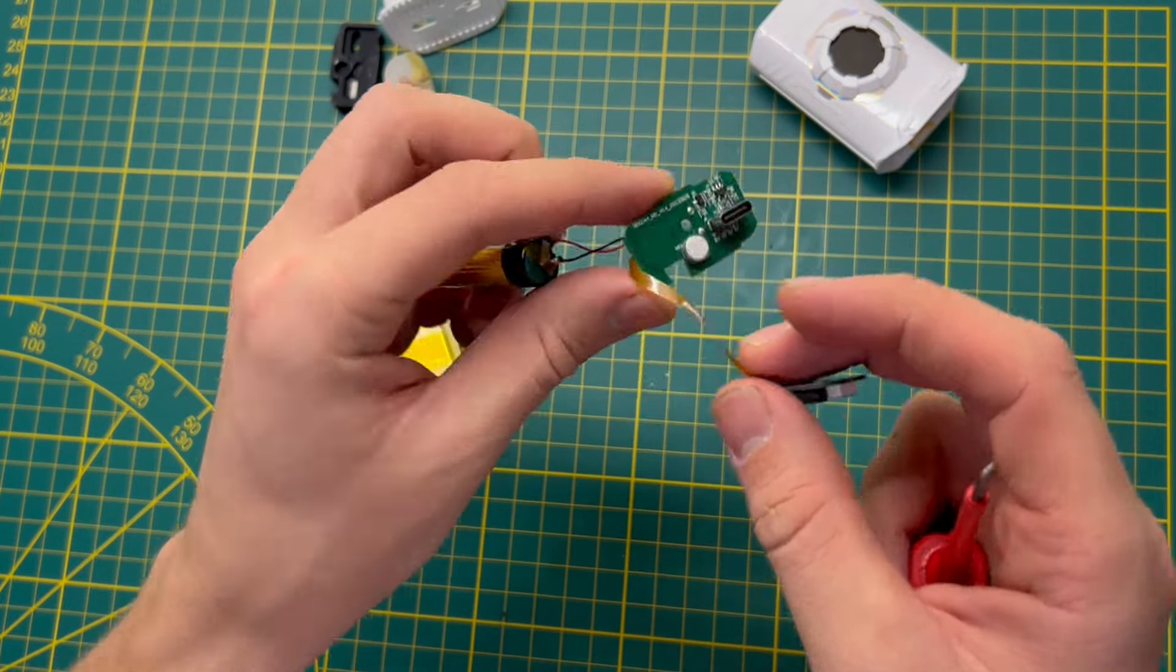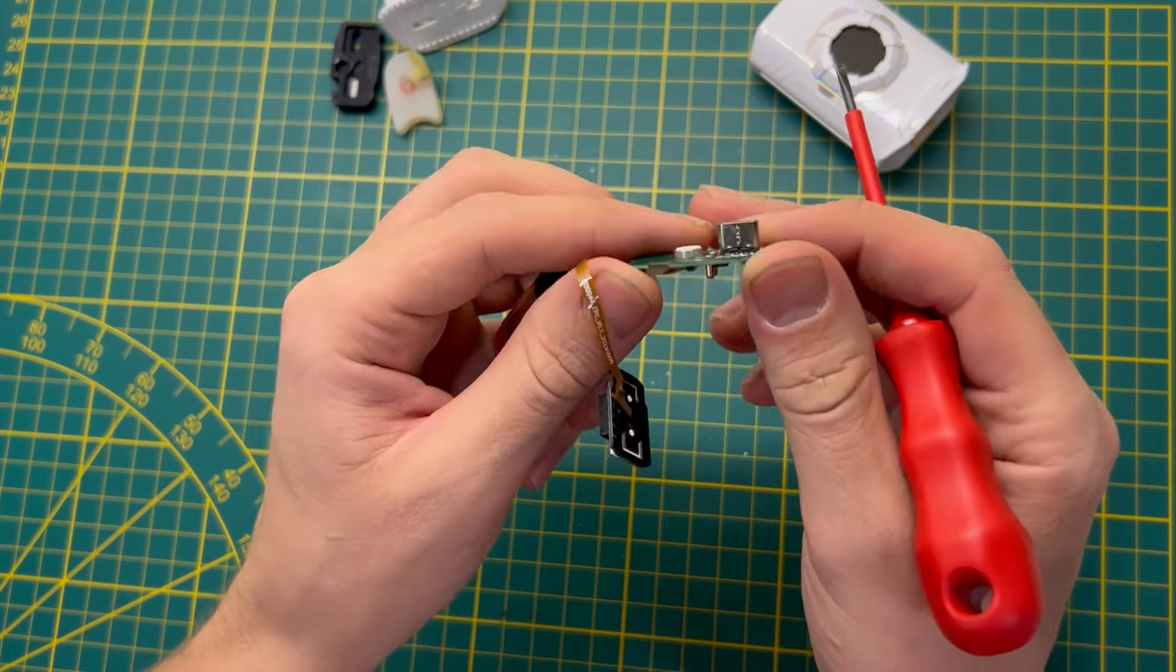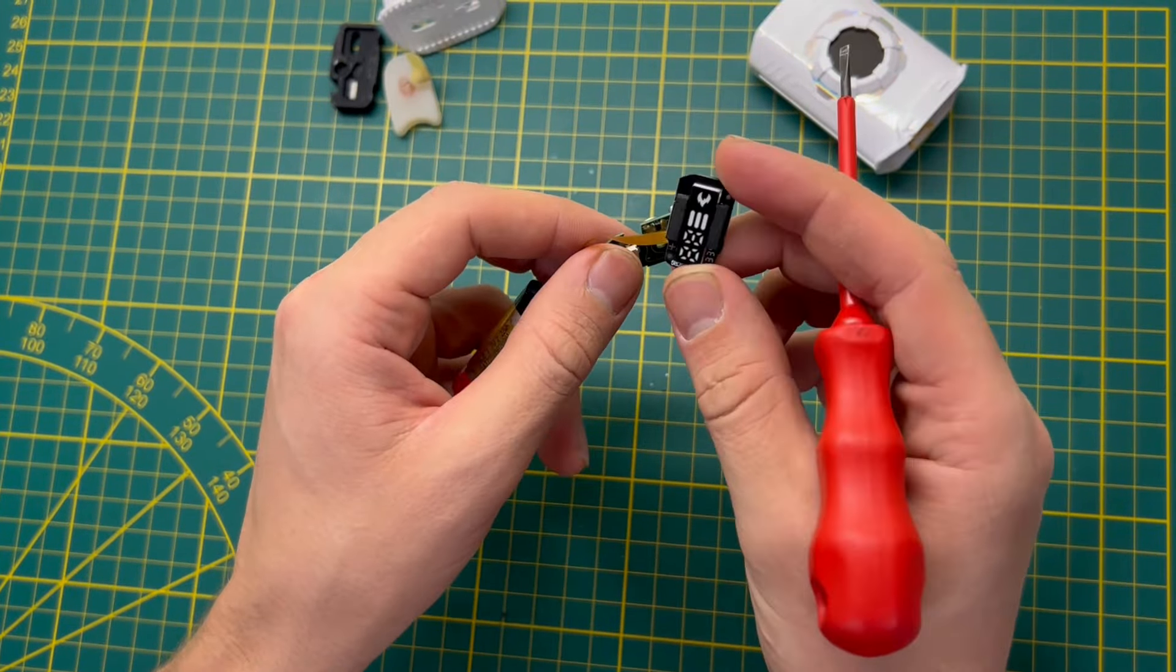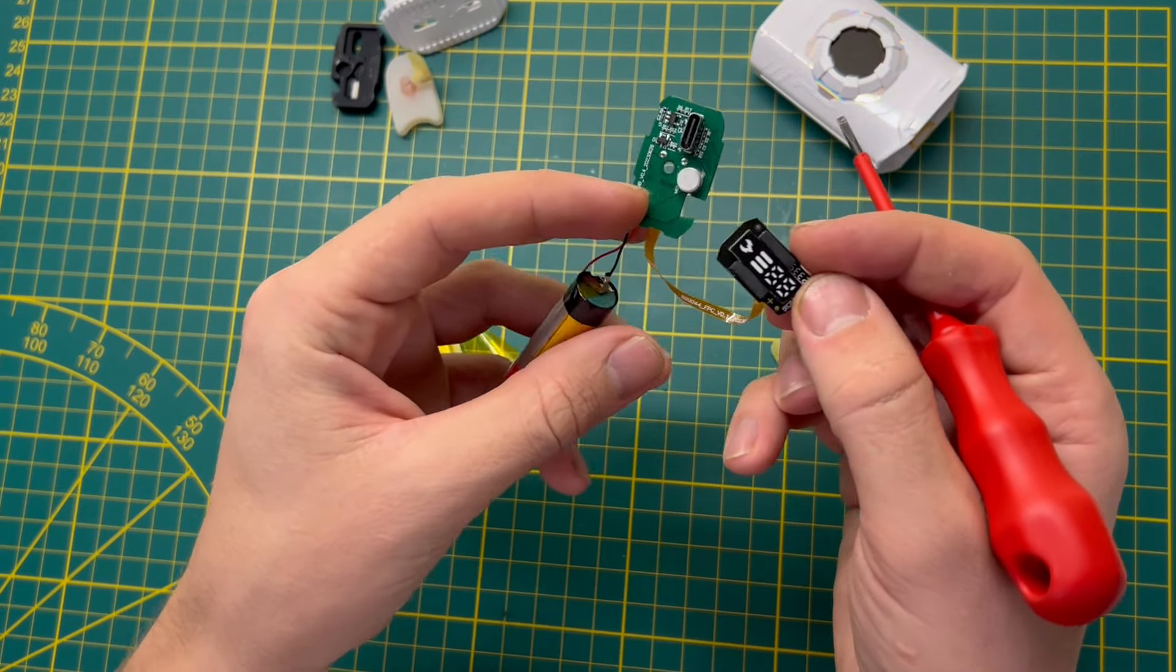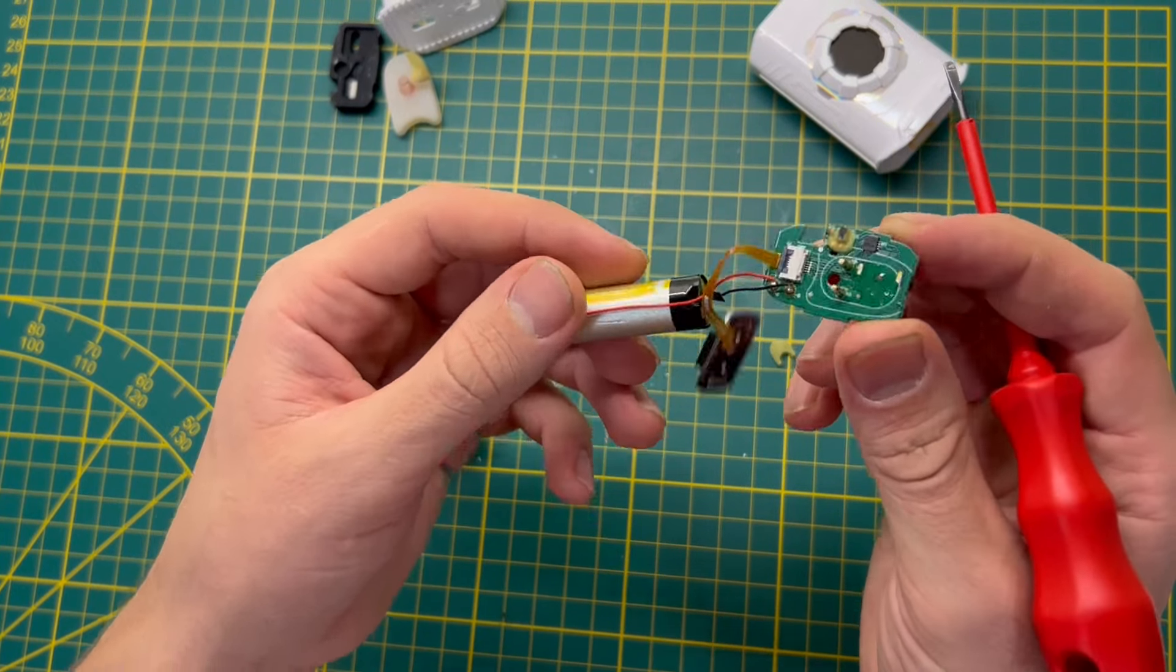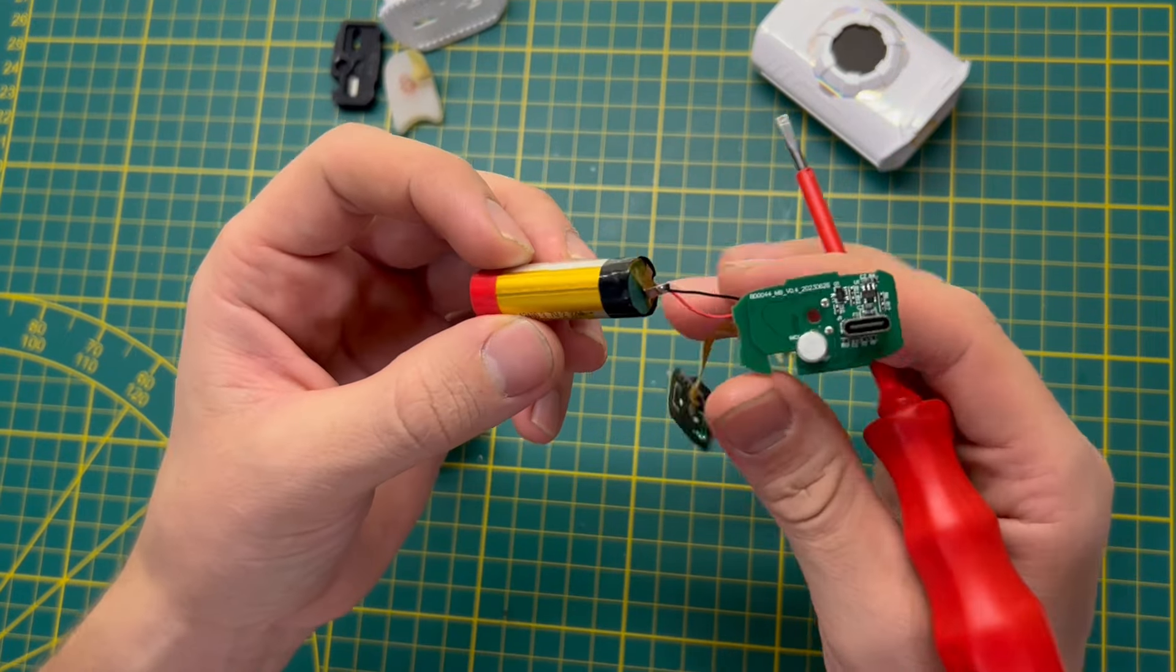Also here we have a board with Type-C connector for recharging and a small screen to see how many percent of battery remains. This part we can easily use for our DIYs in the future. Next time I will try to make some DIYs and show you.